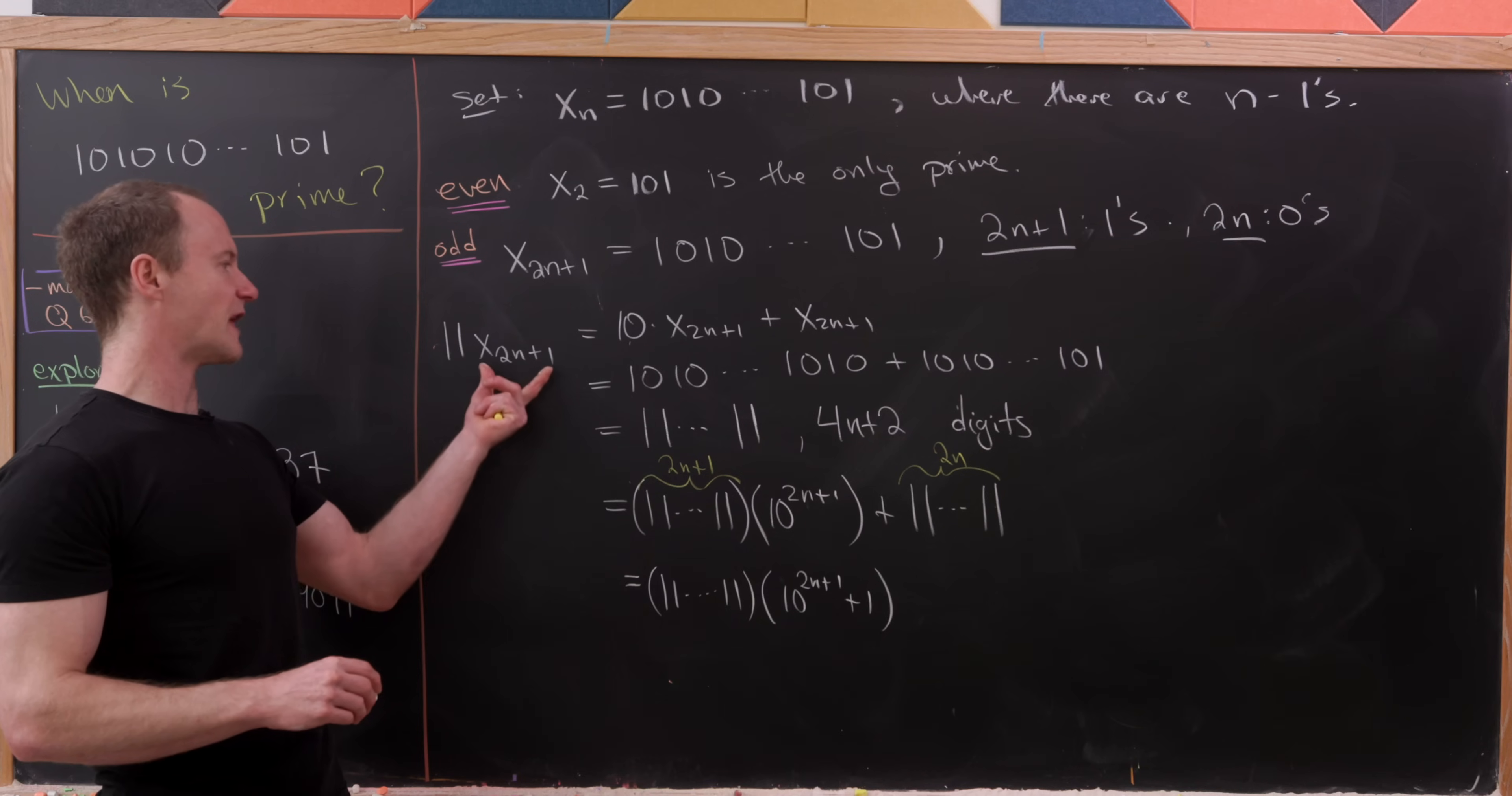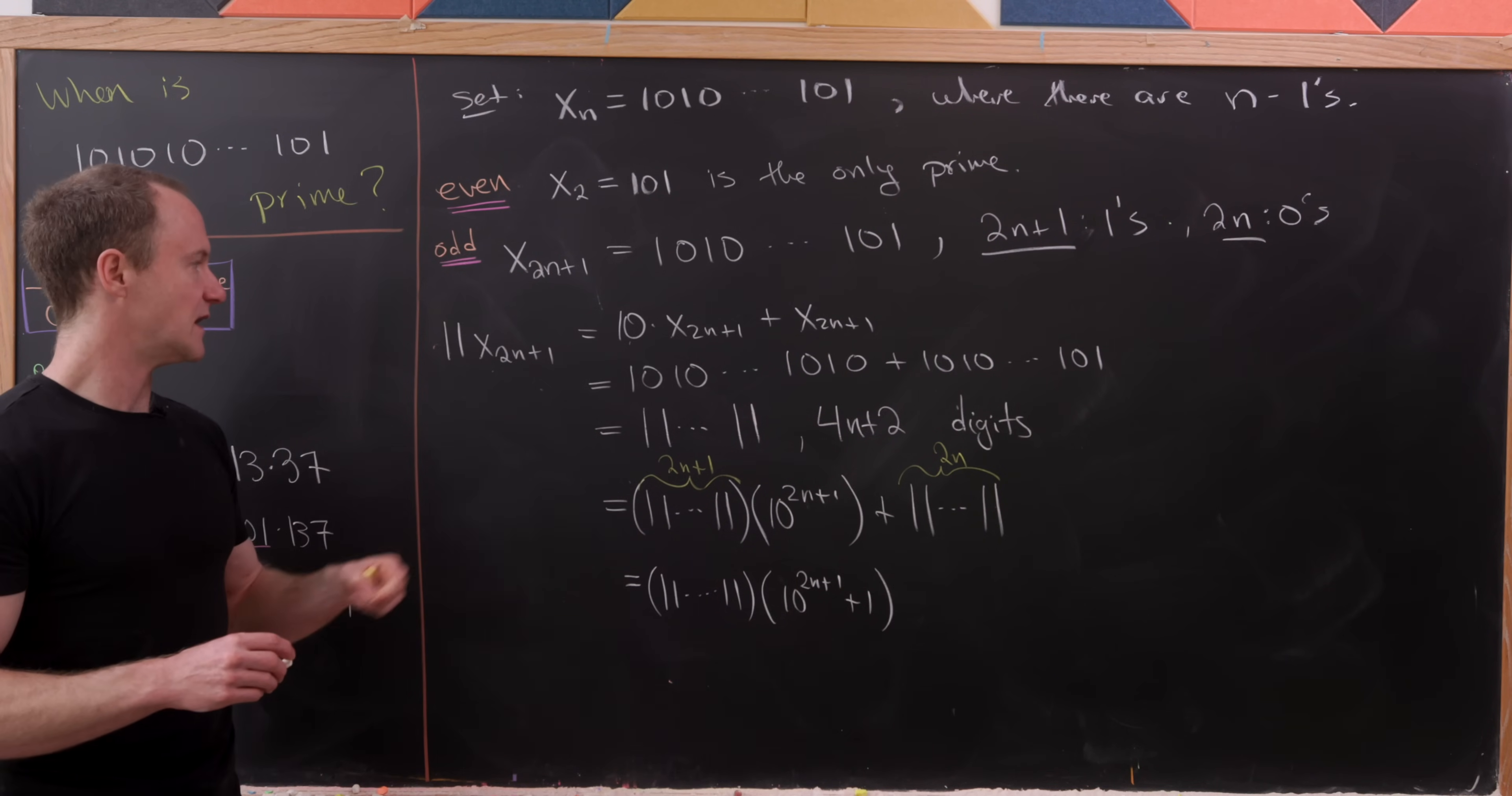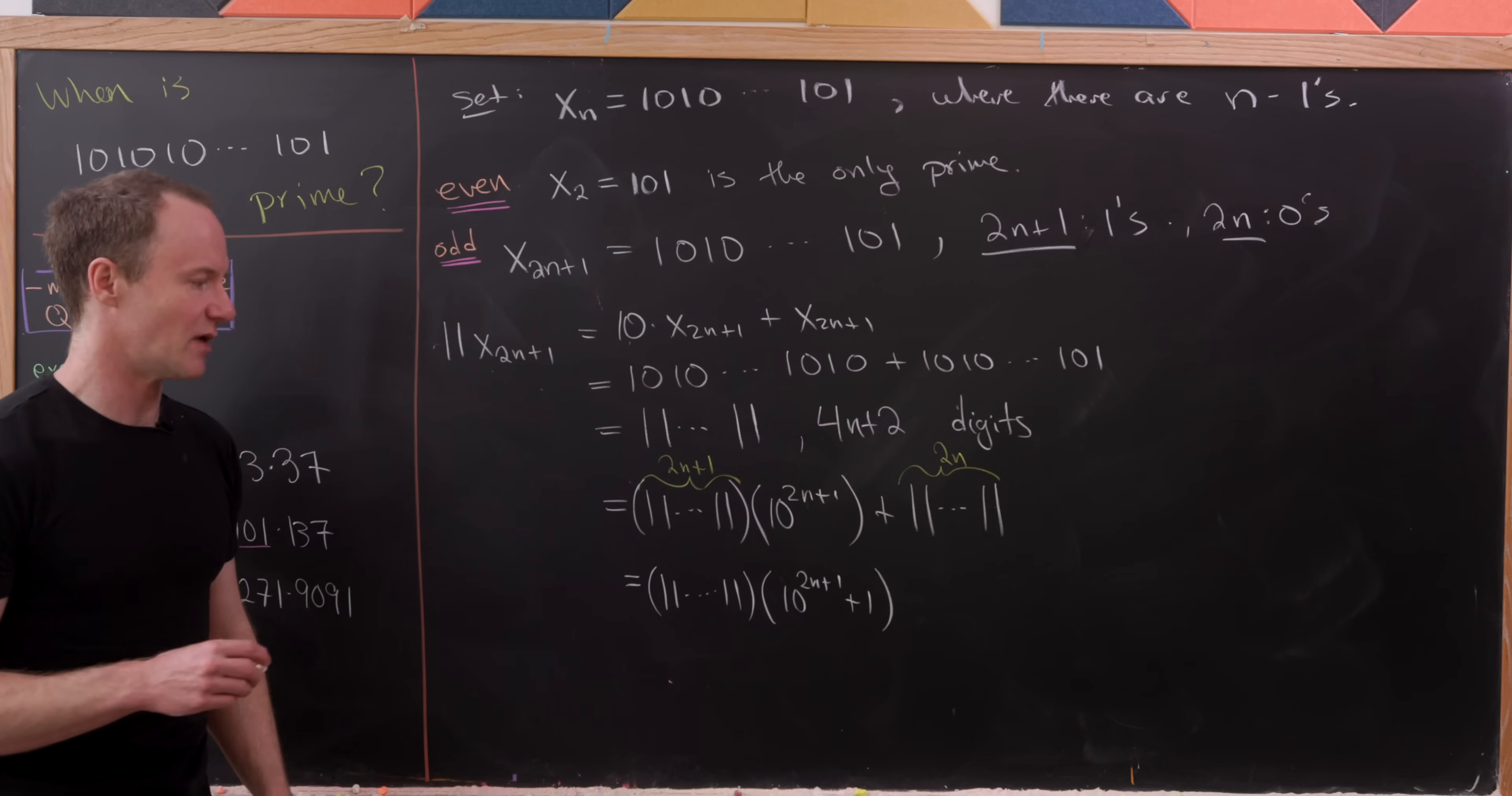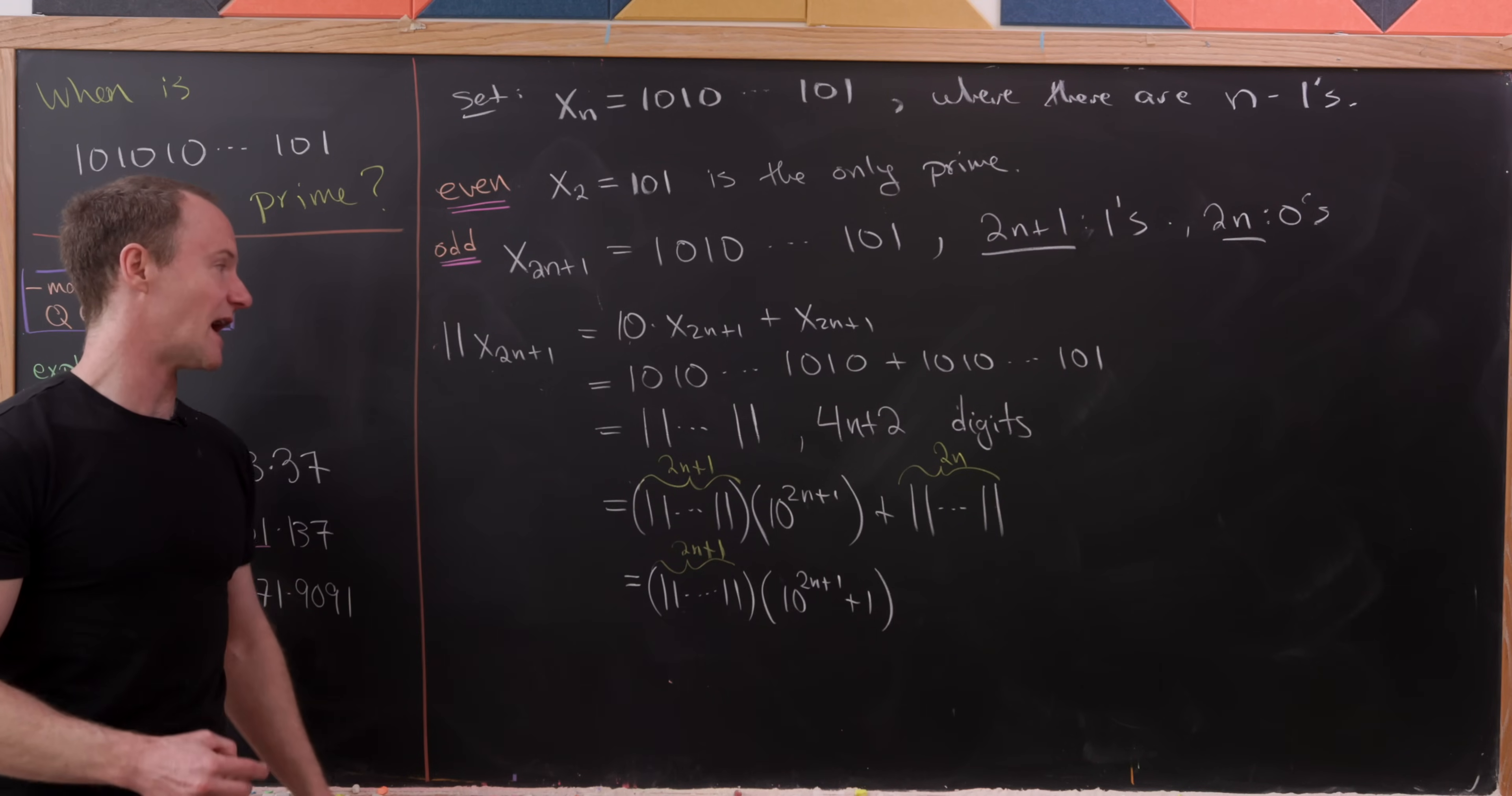But now, from here, we could argue that our x sub 2n plus 1 is composite. And that's because we factored 11 times x to the 2n plus 1 into a product of numbers, both of which are larger than 11. And so, that means one of these numbers, whichever one is not divisible by 11, is a divisor of x sub 2n plus 1. And I should mention that we know that x sub 2n plus 1 is not divisible by 11 by a simple divisibility test for 11, where we take the alternating sum of the digits.